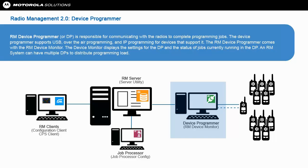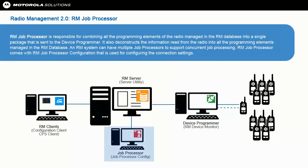An RM system can have multiple Device Programmers to distribute programming load. RM Job Processor is responsible for combining all of the programming elements of the radio managed in the RM database into a single package that is sent to the Device Programmer. It also deconstructs the information read from the radio into all the programming elements managed in the RM database. An RM system can have multiple job processors to support concurrent job processing. RM Job Processor comes with RM Job Processor configuration, used for configuring connection settings.